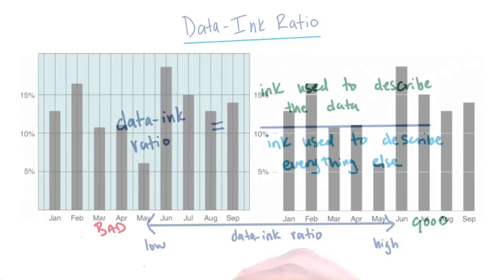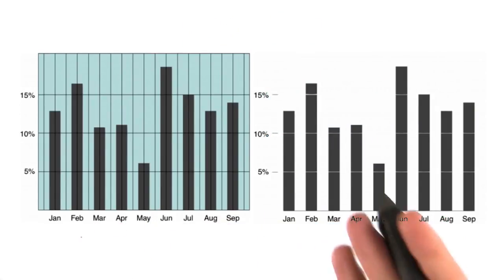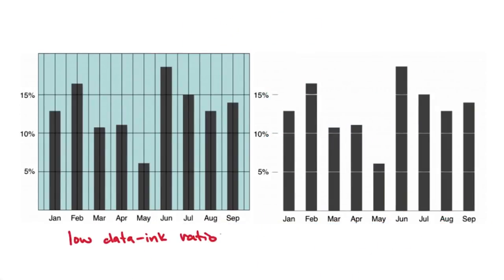Let's look at an example. In this example, we look at two graphs that are representing the same information. On the left-hand side, we have a visualization that has a low data-to-ink ratio. Notice the extra elements in the visualization that can be removed, such as the blue background, the horizontal and vertical grid lines, and the outer black border. What this shows is that a large amount of the ink used in this visualization does not directly describe the data at hand.